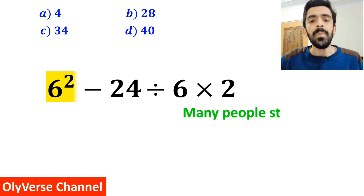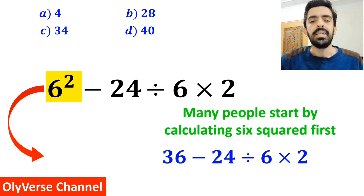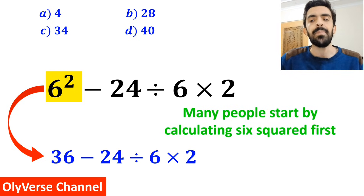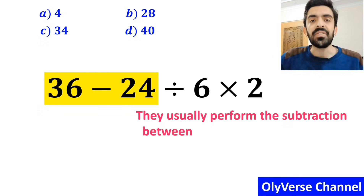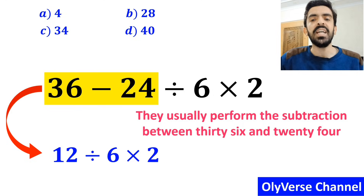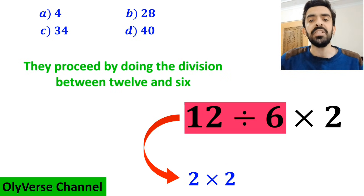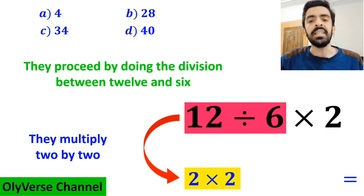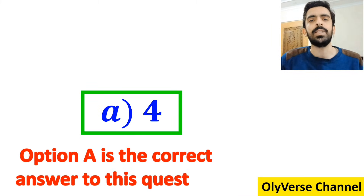To solve this question, many people start by calculating 6 squared first, and rewrite the expression as 36 minus 24 divided by 6 times 2. In the next step, they usually perform the subtraction between 36 and 24, simplifying to 12 divided by 6 times 2. Then they do the division between 12 and 6, which gives them 2 times 2, and finally multiply to get the answer 4. Without any hesitation, they quickly say that option A is the correct answer.